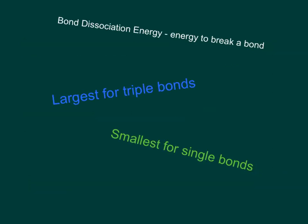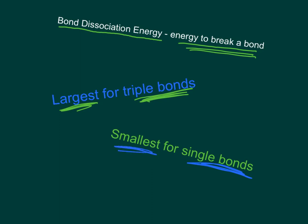The last thing we're going to talk about is something called bond dissociation energy, the energy it takes to break a bond. Does it make sense if triple bonds are the strongest, they have the largest bond energy? And if single bonds are the weakest, they have the smallest bond energy. That's really all there is to it.